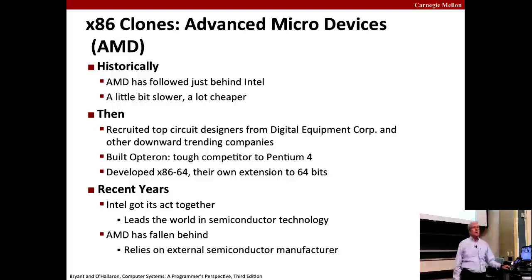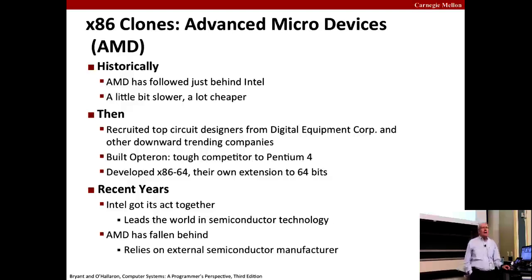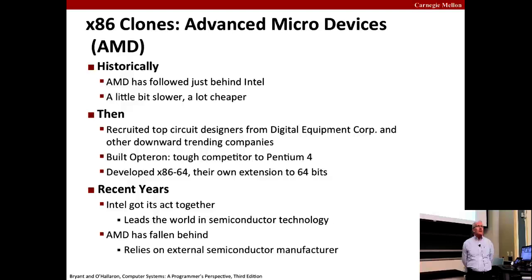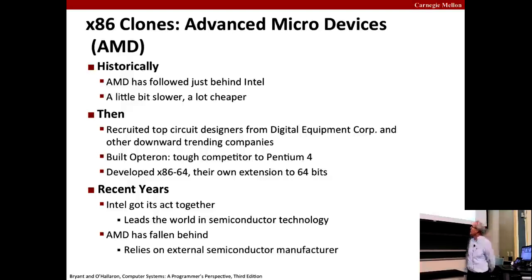Intel's historic competitor is AMD, which was always number two — like Avis behind Hertz. AMD had a burst of success when Intel wasted time on bad ideas. AMD was actually the one that came up with the 64-bit extension to x86 that we use today. Currently, AMD is not doing well — Intel got its act together and has more or less crushed AMD.